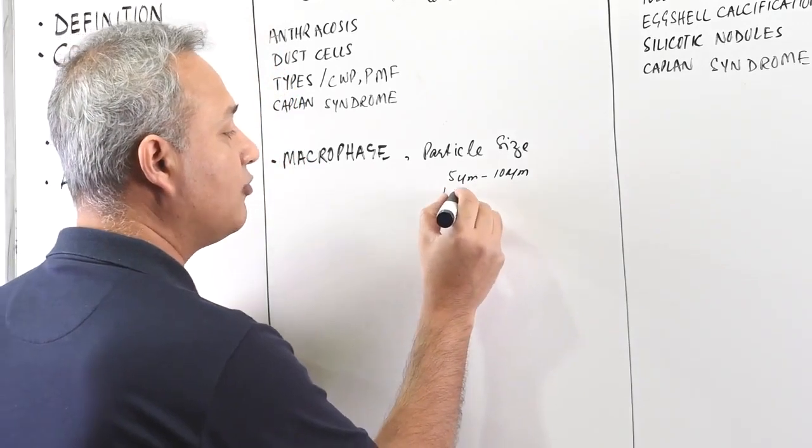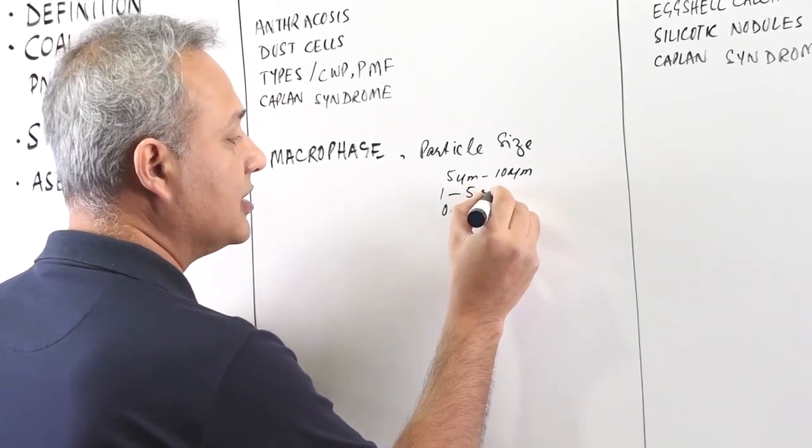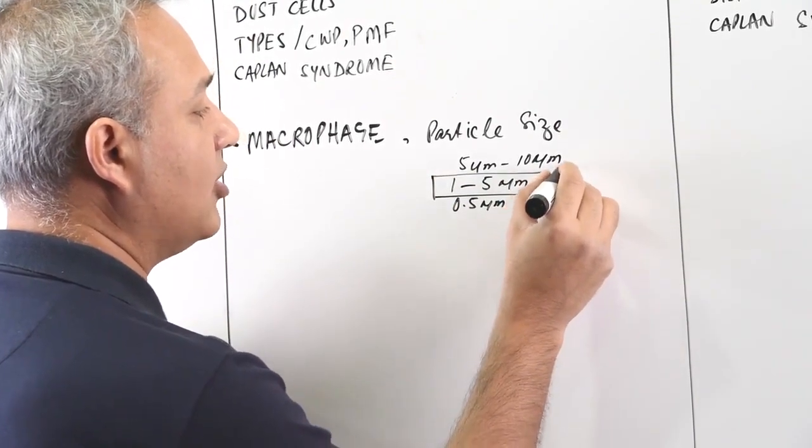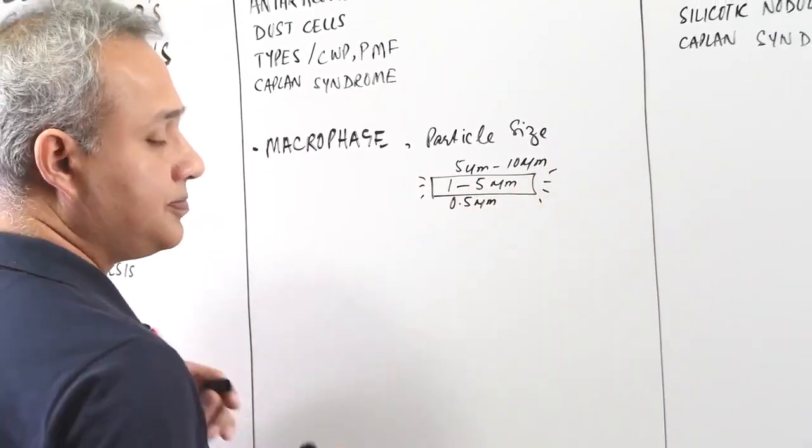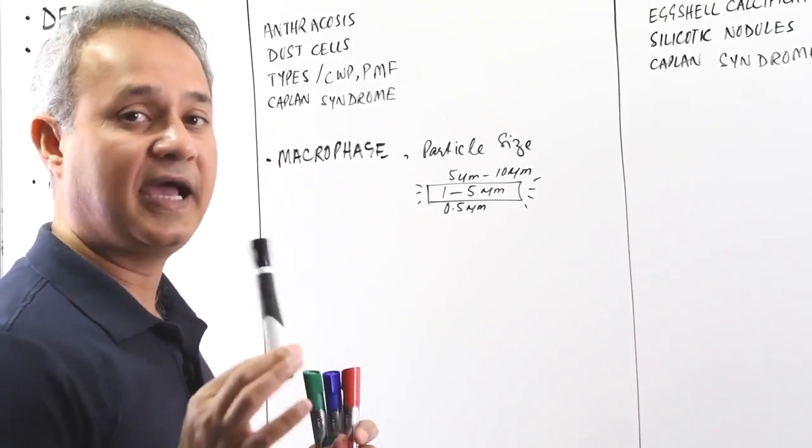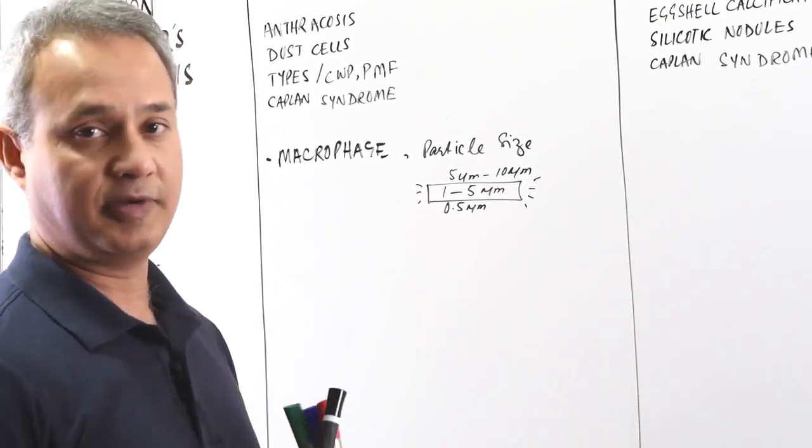It is the particles which are 1 to 5 micrometer that are the most dangerous particles. These are the ones that cause the problem. So keep this in mind, write it down somewhere. The particle size has to be between 1 to 5 micrometer.